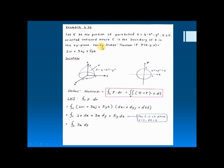Oriented outward — the boundary of Stokes' theorem is in the X-Y plane. The first step is to look for the boundary terms. The solution: first, you have to draw the 3D plane in order to find C, which is the boundary of Sigma in the actual plane.